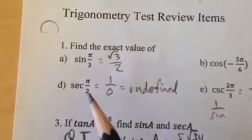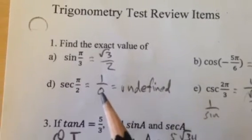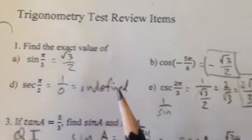Secant of pi over 2, that's 1 over the cosine of pi over 2, which is 0. 1 over 0 is undefined. It's not 0, it's undefined.